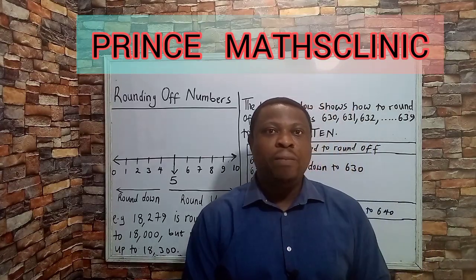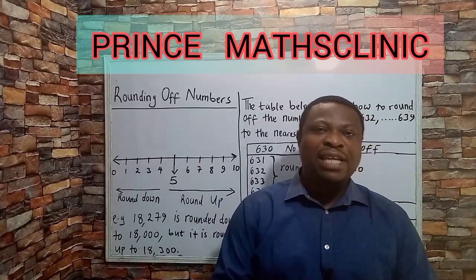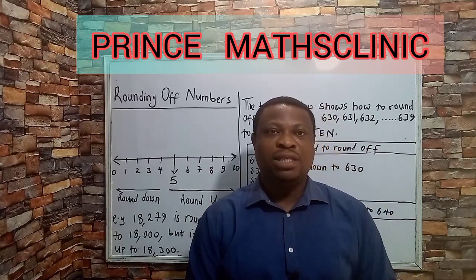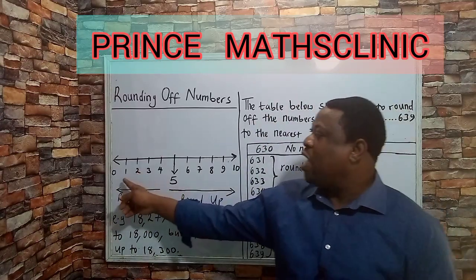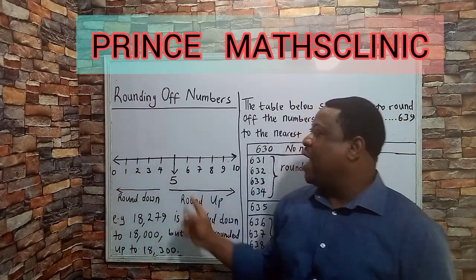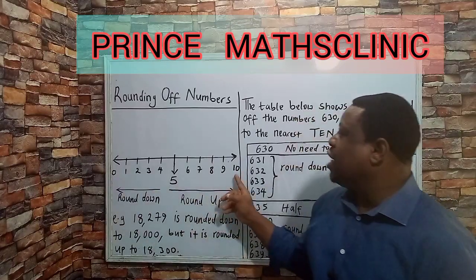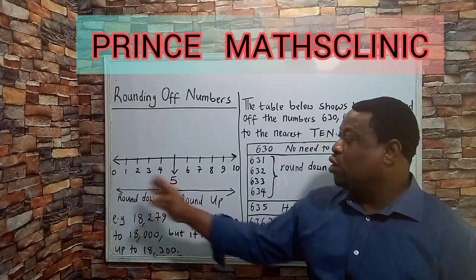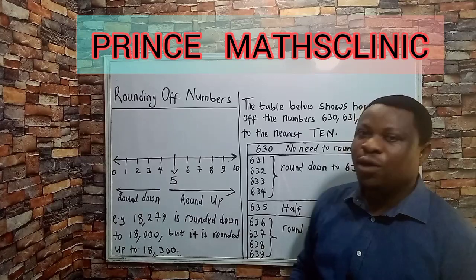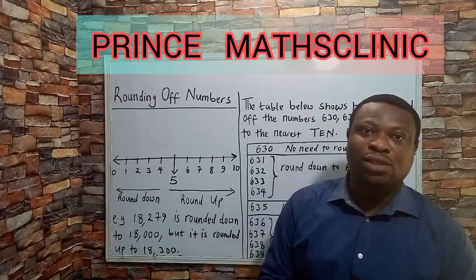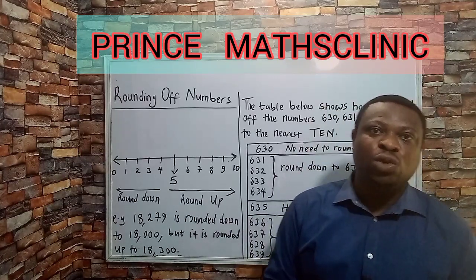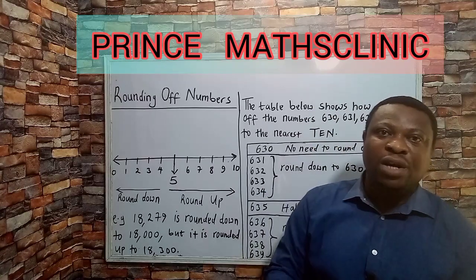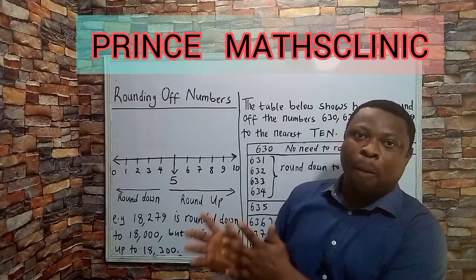In rounding off numbers, we use certain parameters. You can see on the board a number line from 0 to 10, with 5 being the middle. The way we round numbers off is that we round some numbers down, while we round some numbers up.